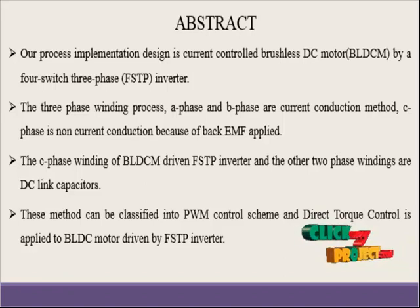The three types of winding process have A phase, B phase, and C phase. A phase and B phase have the current conduction method and C phase has the non-current conducting method because we have applied back EMF method. In the computation, current ripple for the switching concept has six working states to reduce the ripple.